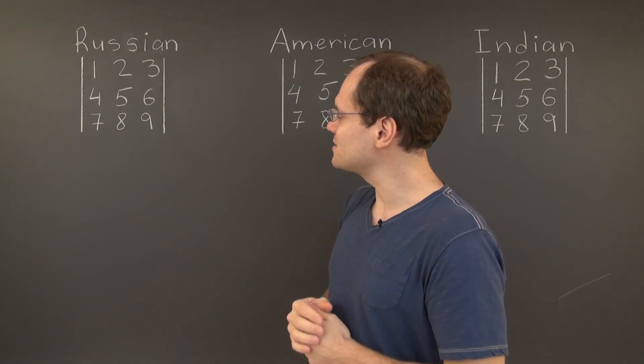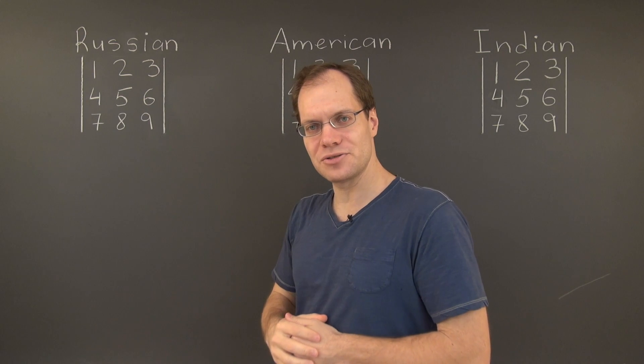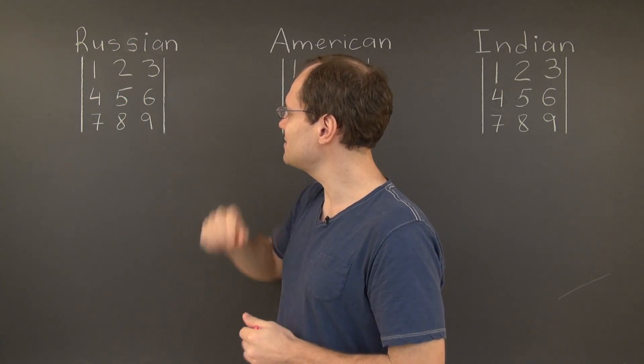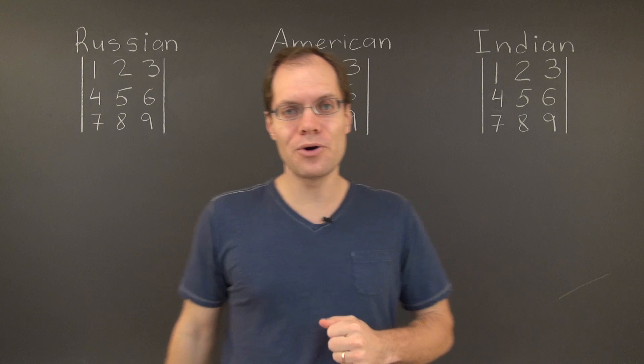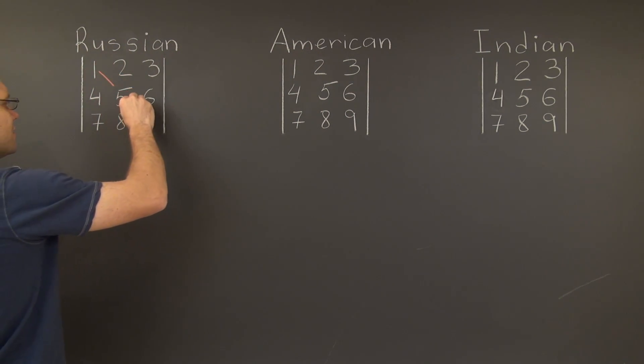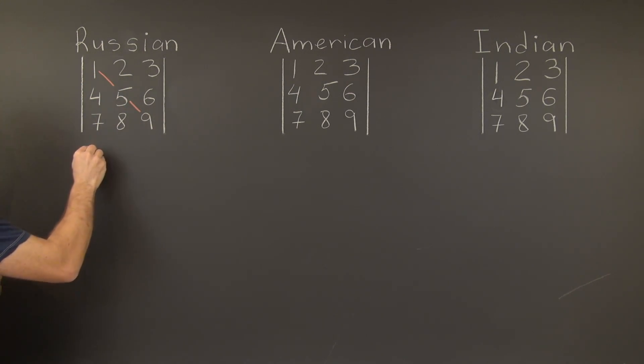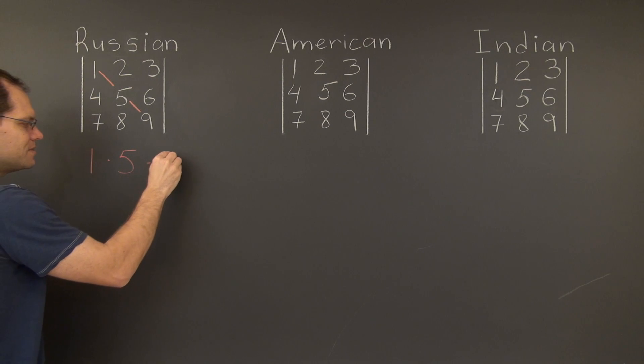The first positive term actually comes from the three diagonal entries. So it's one times five times nine. So let's draw it on the board and write it down. The pattern is right here. It's the entries on the main diagonal and the corresponding term is one times five times nine.